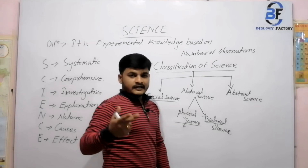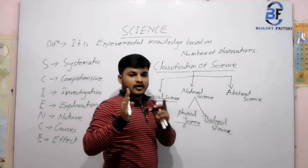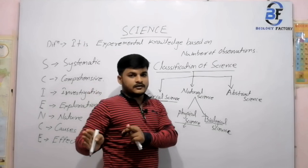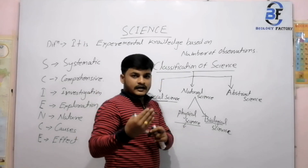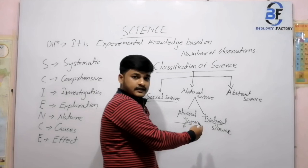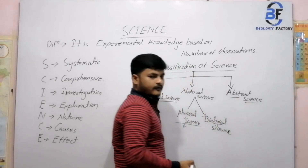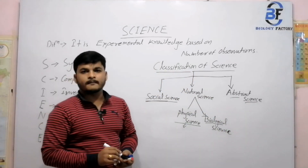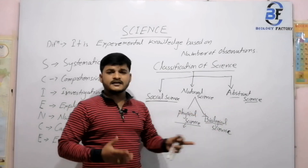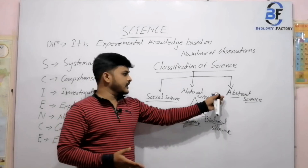Biology is classified into two types: one is Botany and another one is Zoology. Botany covers all things related to plant science, and Zoology is the animal science. So we divide biology into botany and zoology. Regarding Abstract Science, it is only related to mathematical knowledge — it is simply the numerical arrangement that forms mathematics, which is related to abstract science.